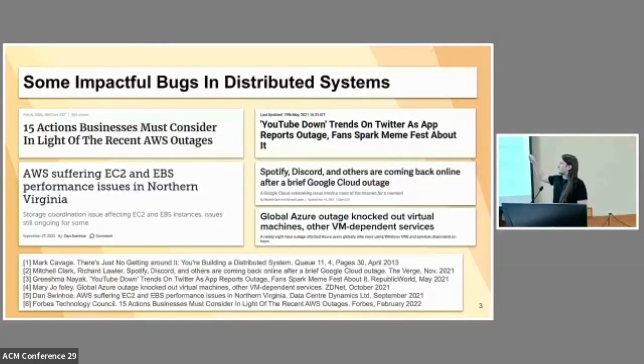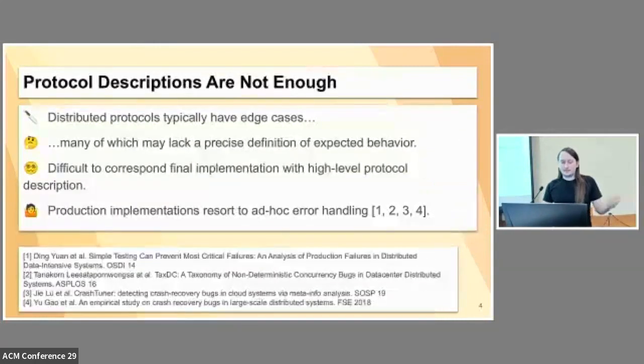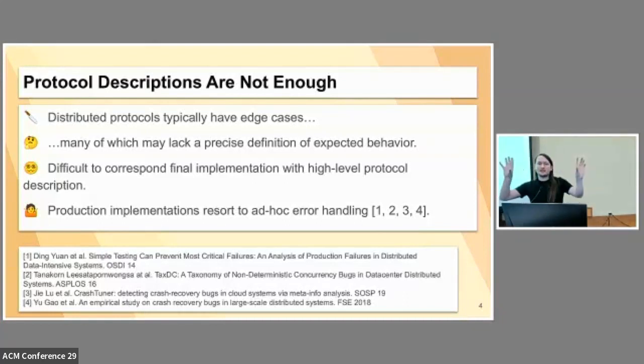Here are some quick motivating examples of real systems, generally cloud systems that went down and took a lot of things with them and made some headlines. No one's safe, really. So how do we fight this? We're taking the approach of talking about this in terms of protocol descriptions. This isn't like finding null pointer errors or something. This is more so you have a distributed protocol, such as some kind of consensus or some kind of other thing that requires communication and various patterns.